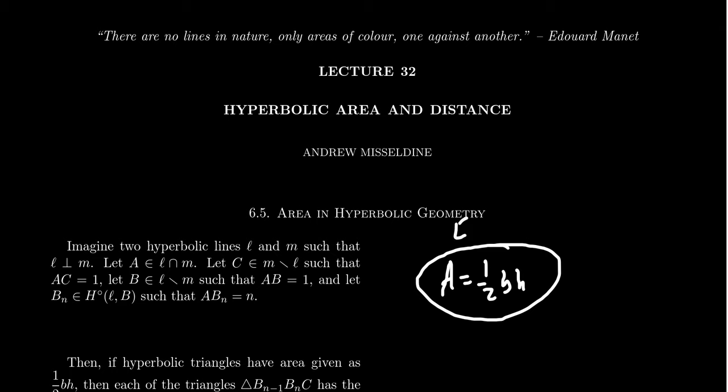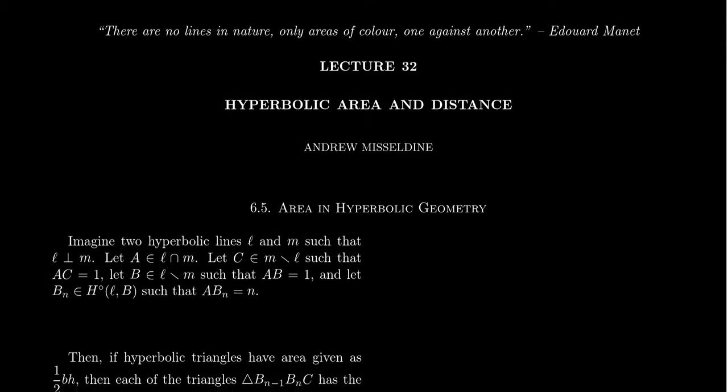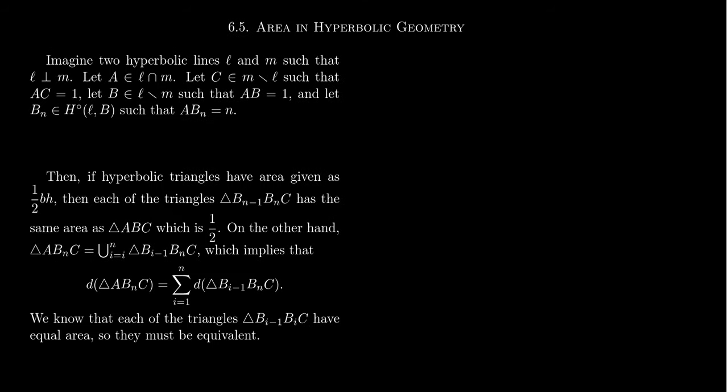This right here is a Euclidean formula. If we use this area function for our hyperbolic triangles, that actually would force us to get the Euclidean parallel postulate. It turns out this area formula is equivalent to EPP. Seems like everything is, isn't it? And so I want to give you an argument on why we can't use the traditional area formula. So take the following situation.